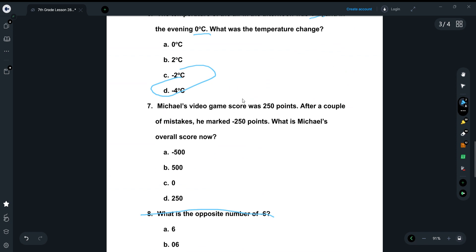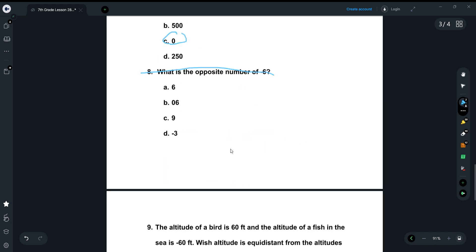Let's see. Number 7. Michael's video game score was 250 points. After a couple of mistakes, he marked that minus 250 points. So basically he's saying he started off with 250 points and then he lost 250 points. What is Michael's overall score now? 250 minus 250. We all know the answer to that. It is 0. Very easy.